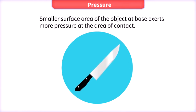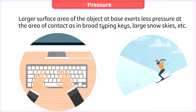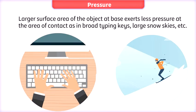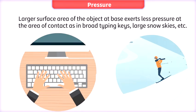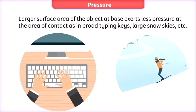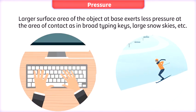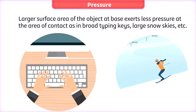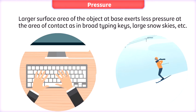Therefore, the smaller the area of contact where force is concentrated, the higher will be the pressure, and vice versa. Larger surface area of an object at the base exerts less pressure at the area of contact.